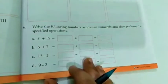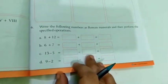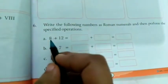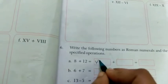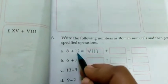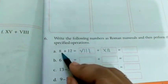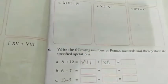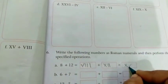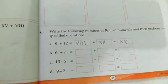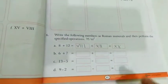Then question number 6: write the following numbers as Roman numerals and then perform the specified operation. So first of all you have to see the number. First number is 8. So convert this into Roman numerals: 5, 6, 7, 8. And this is 12: 10 and 2, that is 12. So 8 plus 12, how much? That is 20. So how you are going to write 20? X and X is 20. So like this way you have to solve this question number 6.